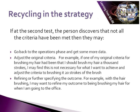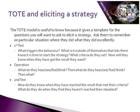The last part of the TOTE model is the exit or decision point, and is a representation of the results of the second test. If at the second test all the criteria have been met, the strategy exits. If they've not been met then the strategy will recycle. For example, if my hair has met all the criteria I'll stop brushing my hair. If there are still some tangles then I'll go back to the operations phase and brush some more. The TOTE model is useful to know because it gives you a template for the questions you'll want to ask to elicit a strategy.